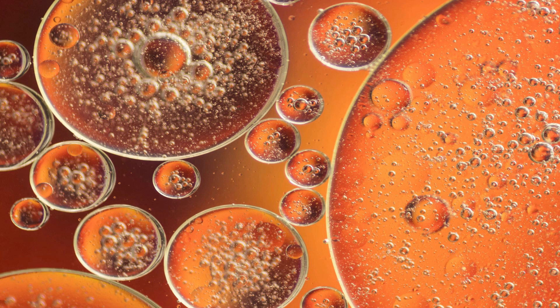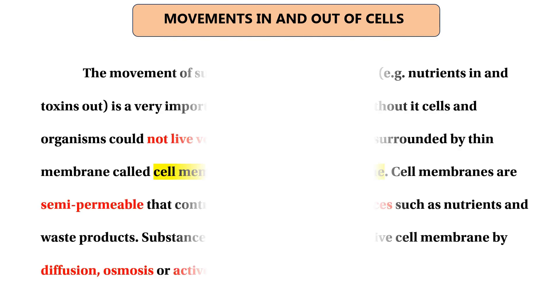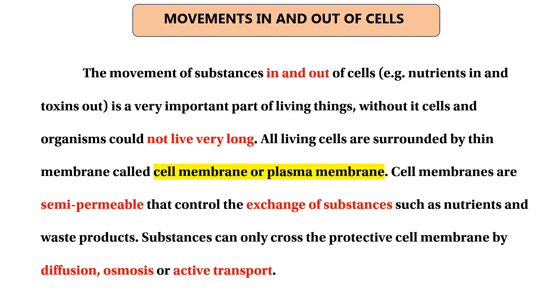We will talk about metabolic waste. The first step is to take a look at the movements in and out of the cell. The movement of substances in and out of the cell includes nutrients into the cell and toxics out of the cell. Toxics mean metabolic waste.